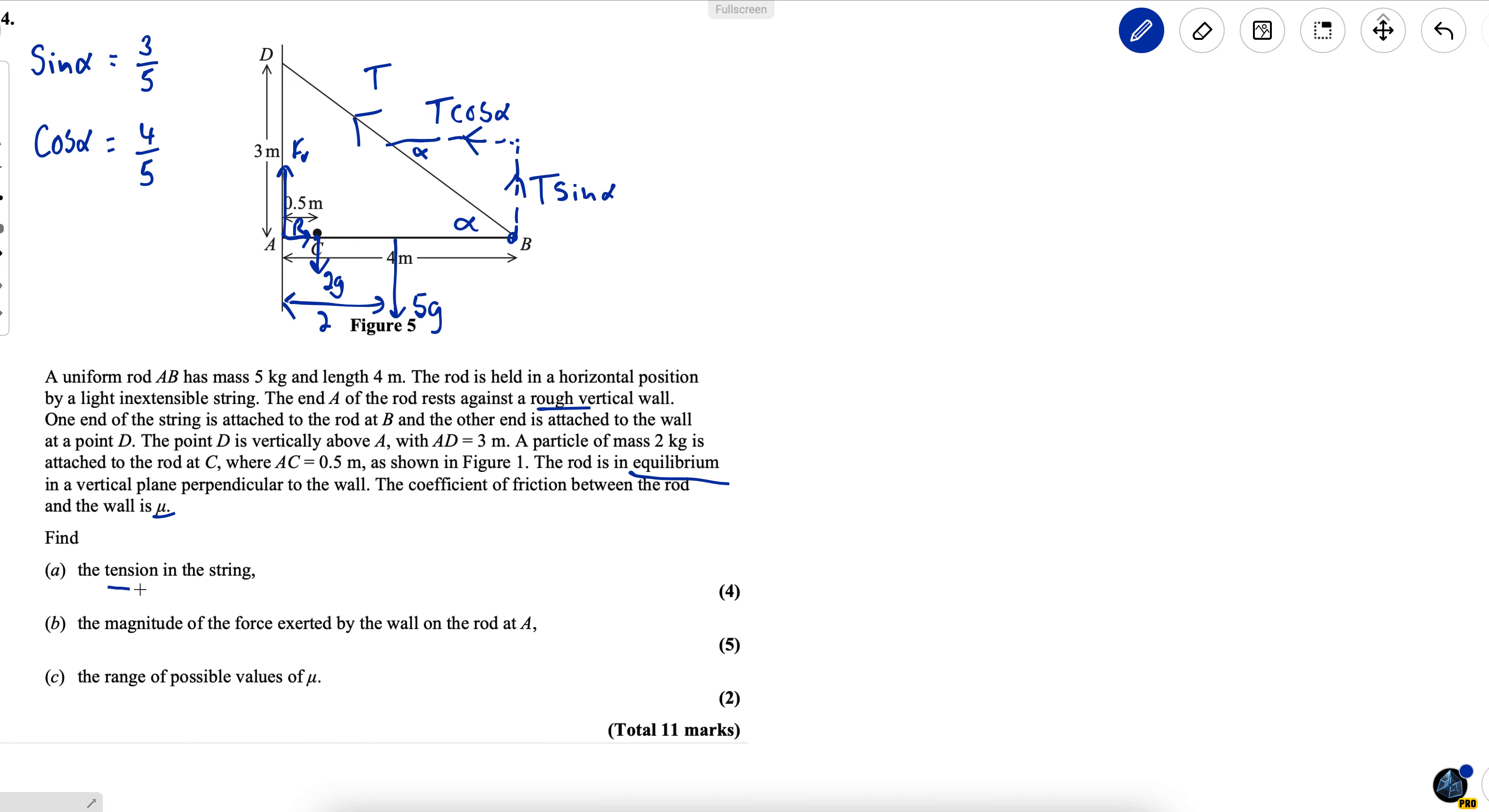I've got to find the tension in the string by resolving vertically I have an extra unknown and horizontally I have an extra unknown on top of my T. Really I would rather not have that so if I take moments about A that will eliminate both of these moments as their distance is zero. So that seems like the sensible thing to do.